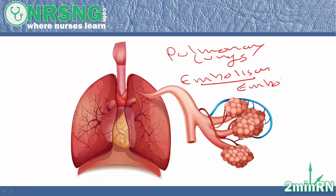An embolus is a clot that breaks off and travels through the bloodstream. What's going to happen with a pulmonary embolism is a clot is going to break off — usually a DVT, something in the lower extremities — travel through the bloodstream into the right heart, and then into the blood supply of the lungs. It's going to get to a spot where it can no longer travel, clogging off the blood supply to a portion of the lungs. Blood trying to reach those alveoli and get perfused with oxygen won't be able to do so.